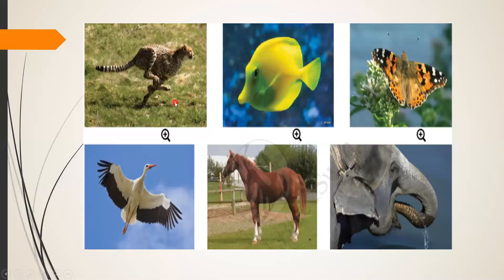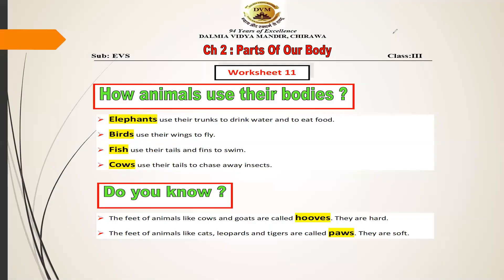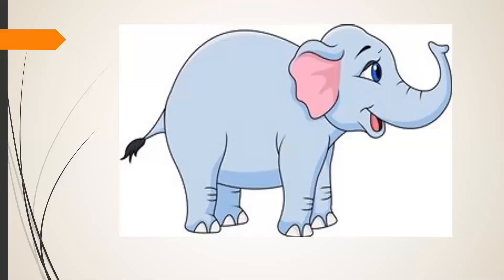Students, let's have a look at the pictures of all these animals. By looking at the pictures, it is very clear that animals look very different from human beings. Hence, the body parts of animals are quite different from ours. Let us first see what topics we are going to cover today: how different animals use their body parts, and what are hooves and paws.